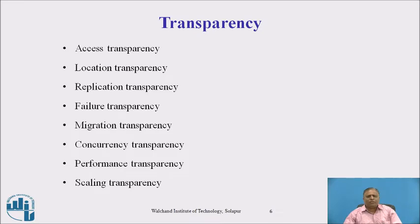Performance transparency means the system automatically reconfigures to improve performance as load varies dynamically, requiring intelligent resource allocation and process migration. Scaling transparency means the system is able to expand without disturbing the activity of users, requiring use of open system architecture and scalable algorithms. We can add any number of clients, servers, and resources in the distributed system.